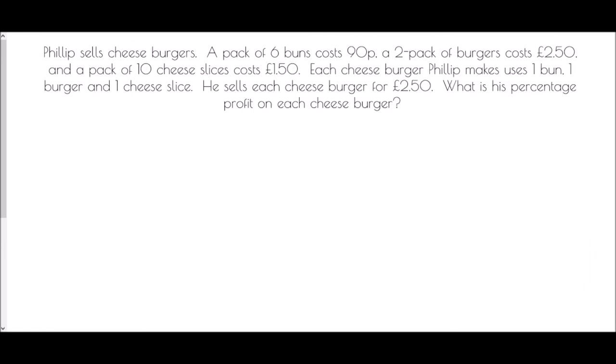And so lastly we're going to look at a functional question here. So Philip sells cheeseburgers. A pack of six buns costs 90p. A two pack of burgers costs £2.50. And a pack of 10 cheese slices costs £1.50. Each cheeseburger Philip makes uses one bun, one burger and one cheese slice. He sells each cheeseburger for £2.50. What is his percentage profit on each cheeseburger? Well if we're going to work out profit the first thing is we need to know how much each one costs. And so if we have six buns costing 90p, well we need to work out what one bun costs. And so 90 divided by 6 is 15 pence. So that's 15 pence per bun.